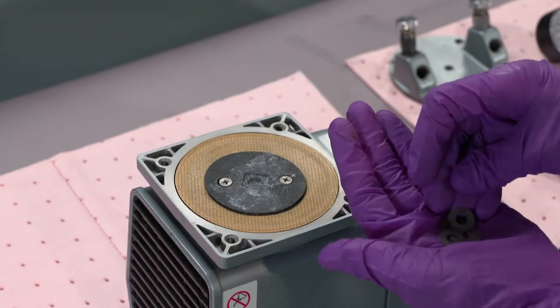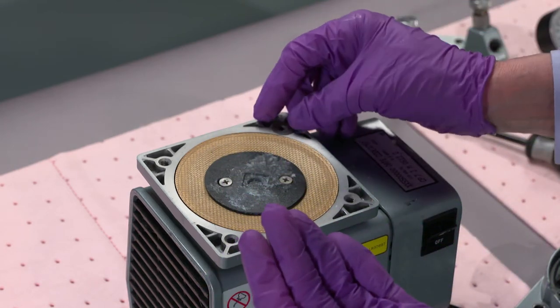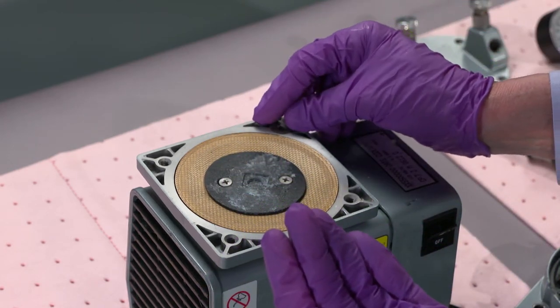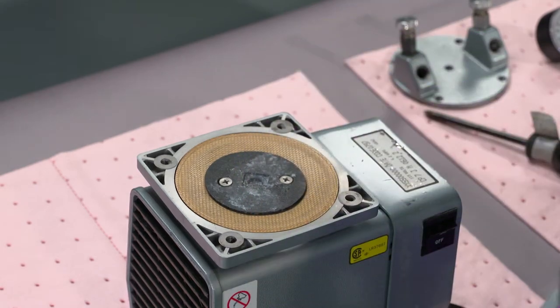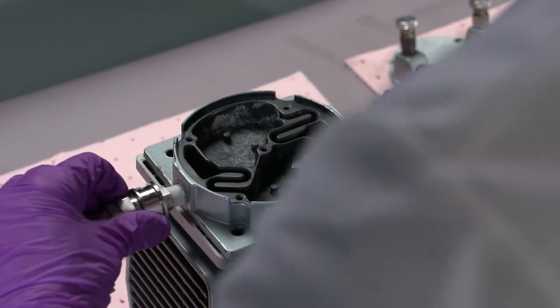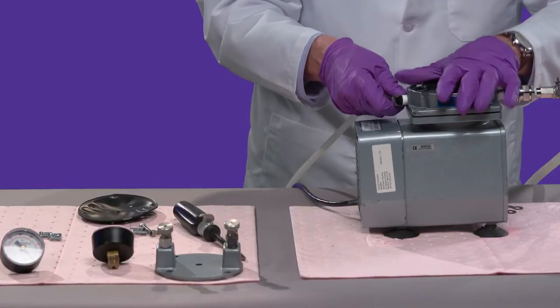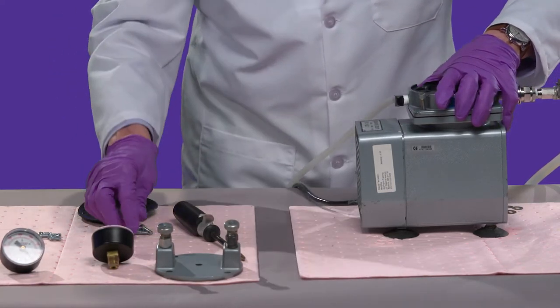And then the washers go on. Make sure that they're not blocking the hole. Then this part sits on the washers, and then held down with four hex bolts.